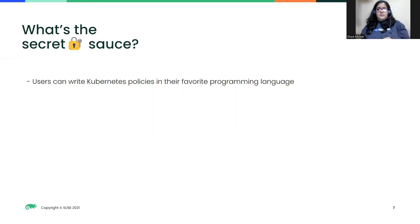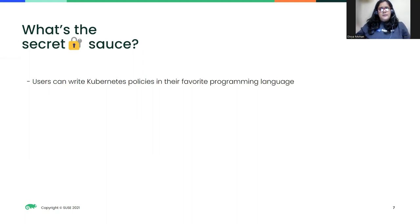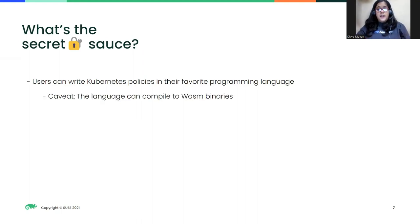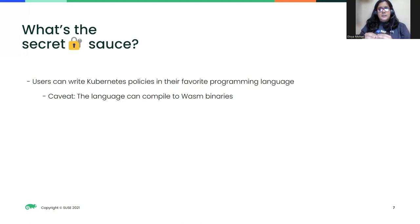That's one of the aims of KubeWarden: to allow developers to write policies in a language they choose. Now, there's a caveat — the language you use needs to compile to WebAssembly. The WebAssembly landscape is growing pretty quickly, so we have a lot of languages fulfilling this caveat currently, but not all are supported by KubeWarden, since we are relatively younger in the landscape as compared to some other tools.